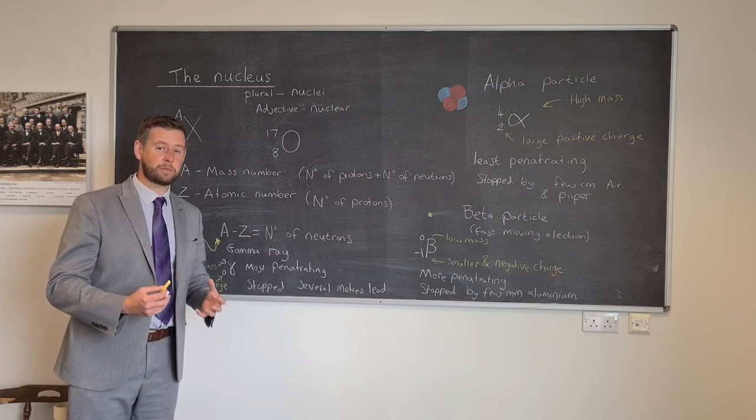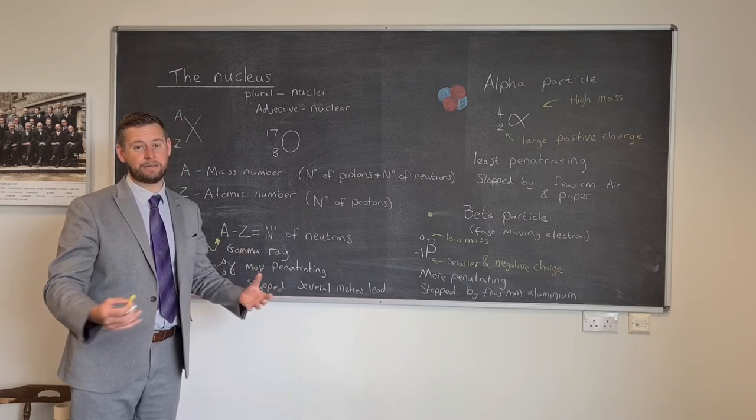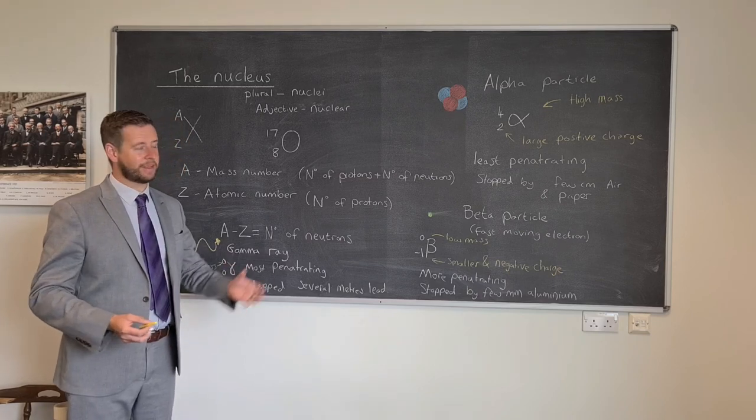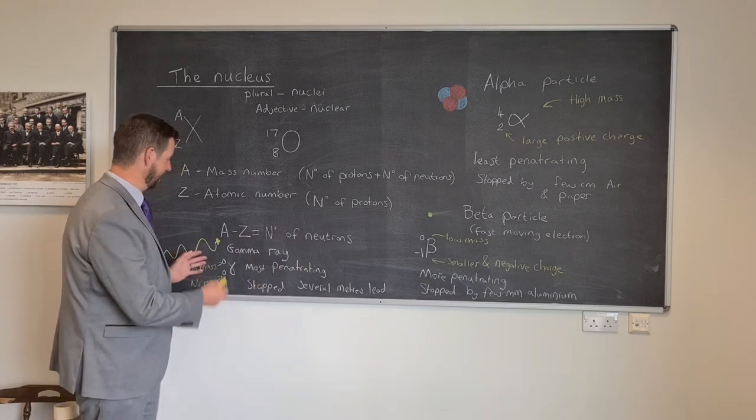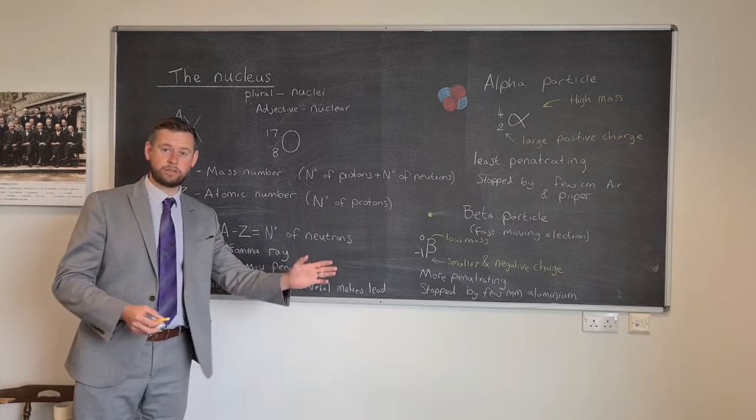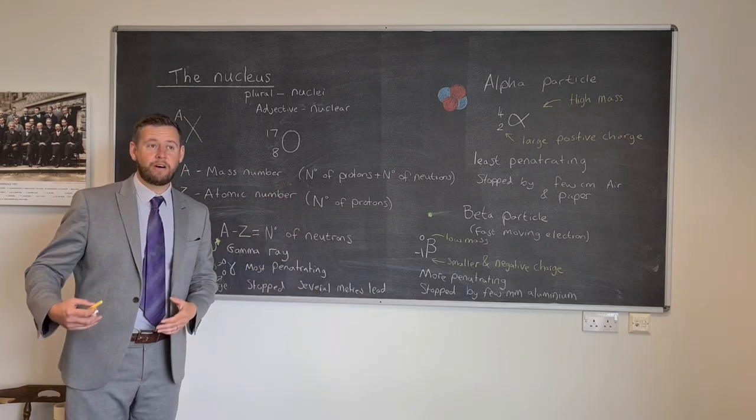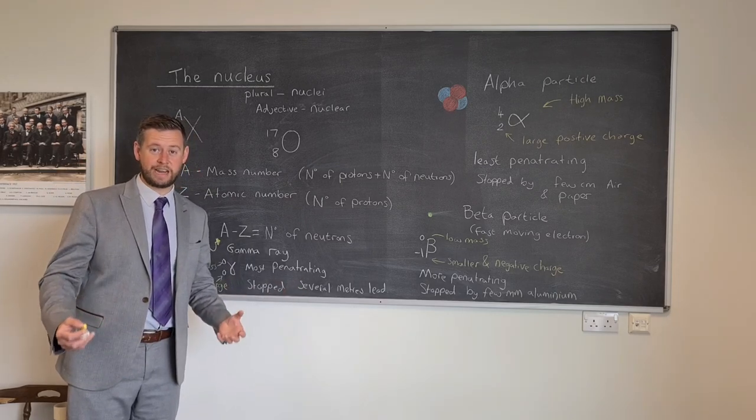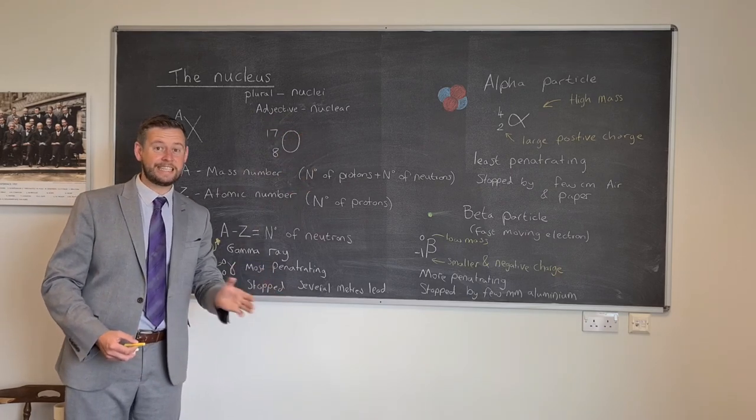We will talk more about the dangers of radiation later. But a key thing to realize is penetration does not necessarily mean damaging to you. Actually it is kind of reverse. One way to think about it is like the jungle. The alpha particle is like the elephant, the beta particle is like the jaguar, and the gamma ray is like the hummingbird. The hummingbird can go straight through the jungle and out the other side without causing any damage whatsoever. The alpha particle can't get through the first row of trees without snapping branches and causing a whole load of damage. It is because it is so damaging that it is least penetrating.